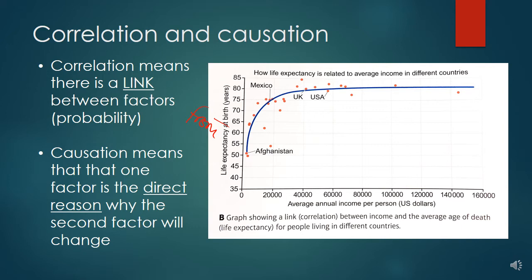The causation of shorter lifespans would be things like access to healthcare, access to clean water, enough food, or living in an area with lower crime rates where it's less likely that you might be killed.